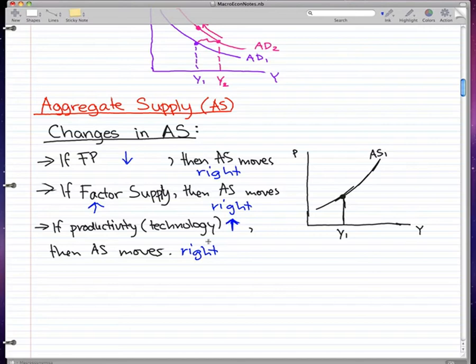So what do these three characteristics really do? Well, they increase our aggregate supply, so aggregate supply moves right.